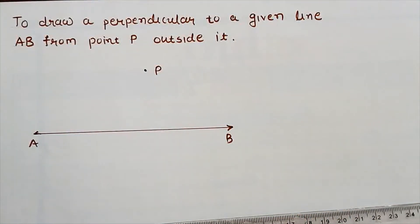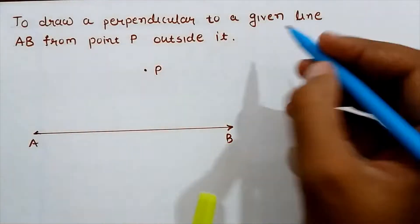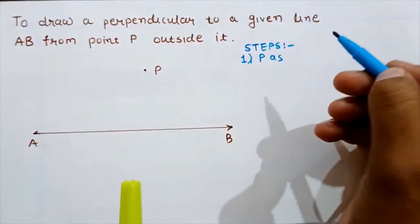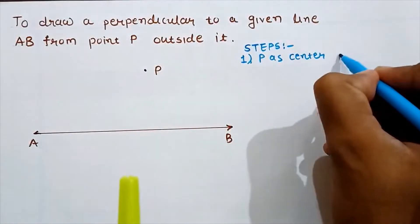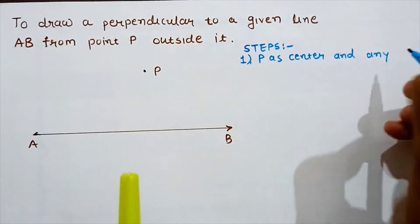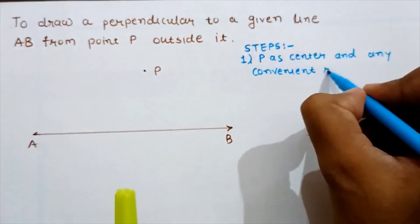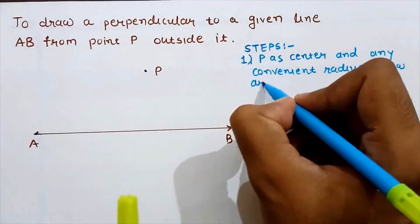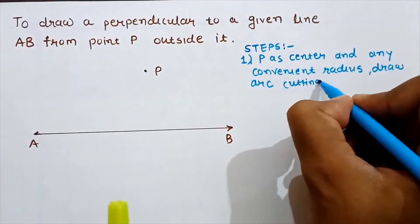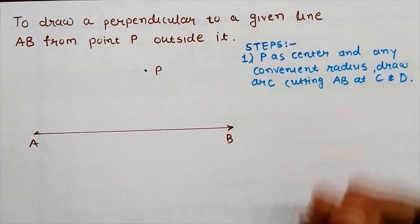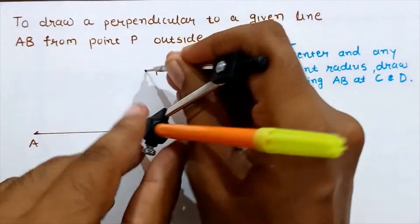Let's start. For this, we have to take P as a center and any random radius. Here I am writing these steps. First step: P as a center and any convenient radius.